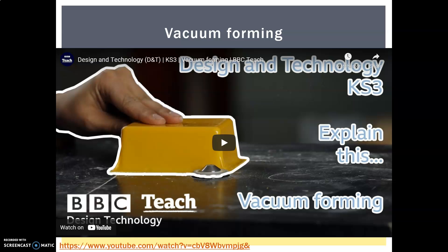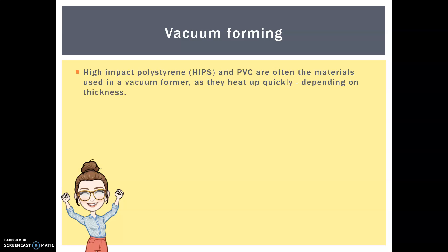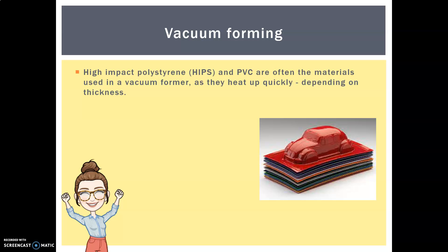Next up is vacuum forming. In vacuum forming, high impact polystyrene (HIPS) or polyvinyl chloride (PVC) tend to be the materials we use because they heat up nice and quickly from the sheet. Here are some examples of the sheet with a little shape over the top.